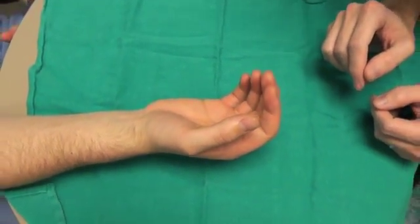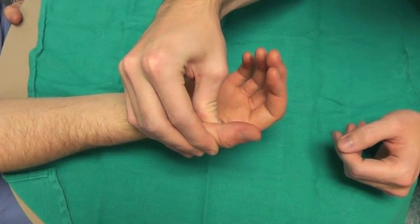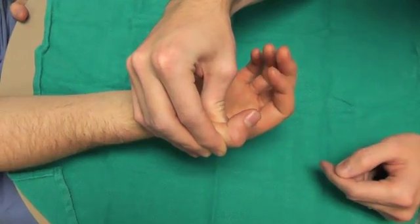Finally, you can assess the tendon function of each digit. The thumb has one tendon which flexes the thumb, the flexor pollicis longus, which can be examined by immobilizing the thumb and allowing movement at the interphalangeal joint.